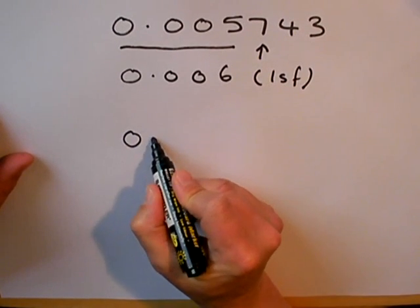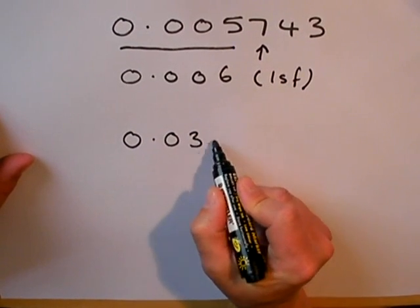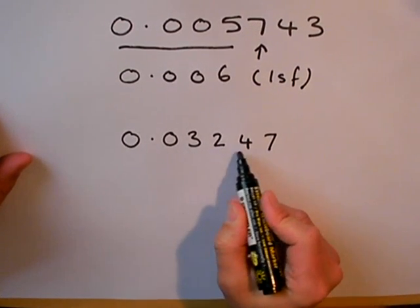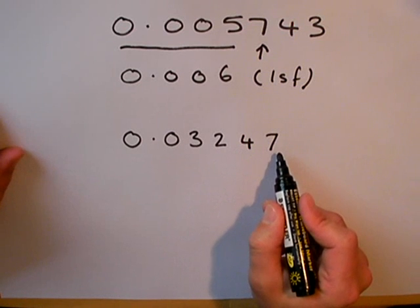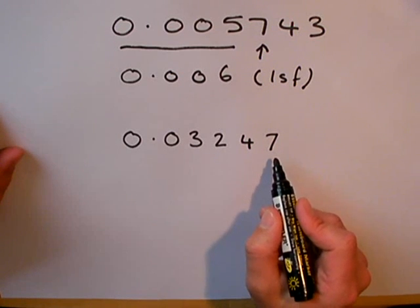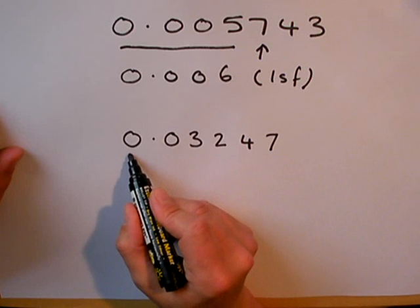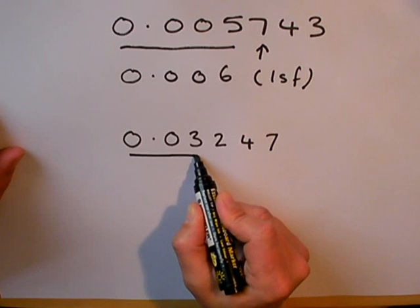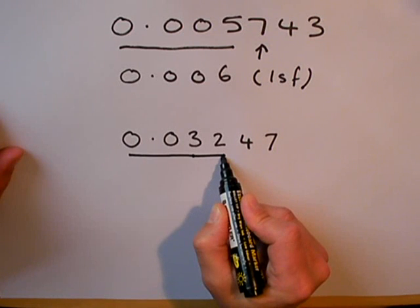Here's another example. 0.03247. I'm going to round this off to two significant figures. Remember, my first significant figure is my first non-zero number. Because I want two significant figures, I've drawn my line so far.